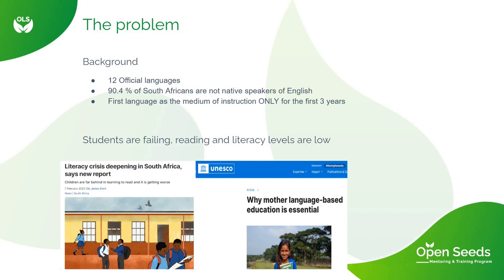What's interesting about the South African context is that although so many people are not native speakers of English, the first language or native language as medium of instruction is only used in the education system for the first three years. Thereafter, the majority of learners in schools have to use a second, third, or even fifth language as the medium of instruction.